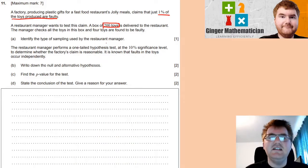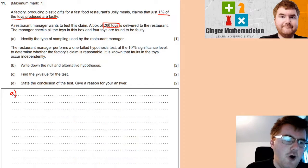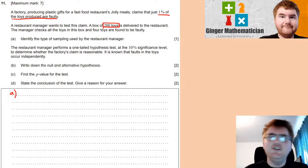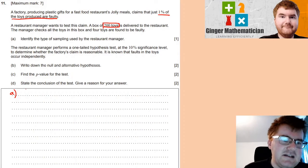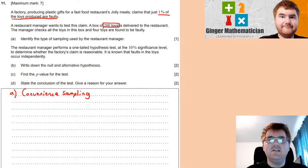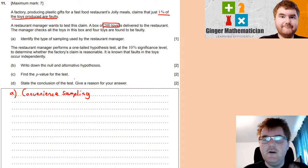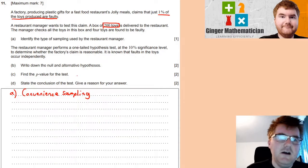And the first thing we need to do is identify the type of sampling. Now, on these high-level applications papers, there's often a one, two-mark question, just identifying sampling methods. It's in the course, so you need to be aware of quota sampling, random sampling, and so on. In this case, however, this is what we call convenience sampling.